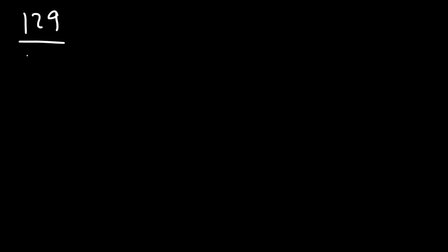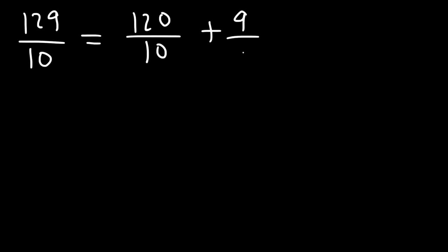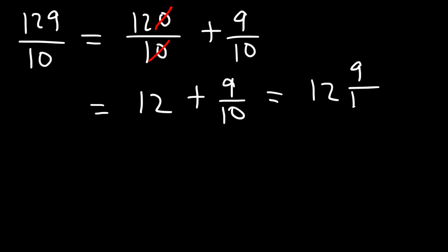Now let's convert this improper fraction into a mixed number. Instead of long division, the highest multiple of 10 just under 129 is 120, and the difference between these two numbers is 9. So we can say 129 is 120 plus 9. Now 120 divided by 10 — cancel the zeros — gives you 12. So we have 12 plus 9 over 10, which is 12 and 9 tenths. That's the answer for the third example.